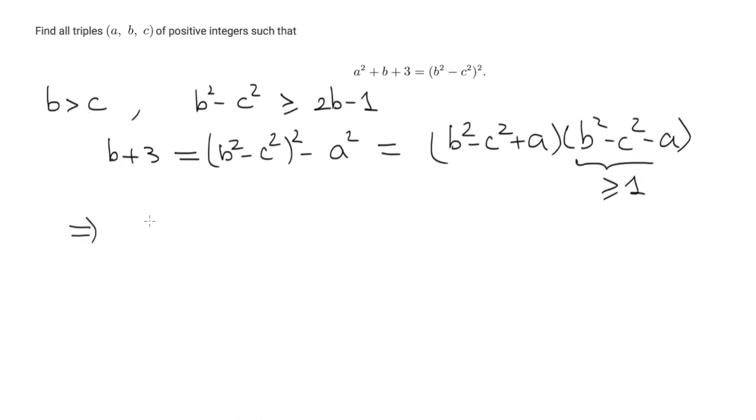So we have that b + 3 is larger than b² - c² + a, and this is again larger than 2b - 1 + a. Rearranging this inequality gives that 4 > b + a.